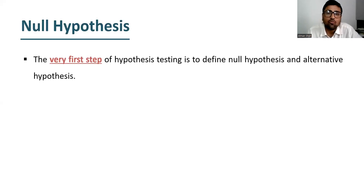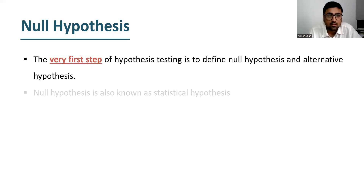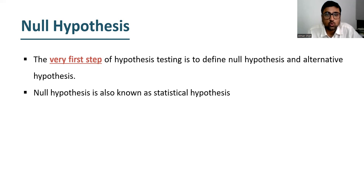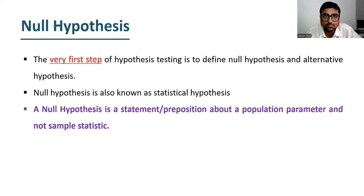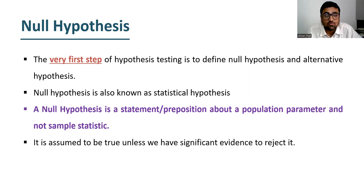The very first step of hypothesis testing is to define null and alternative hypothesis. The null hypothesis is also known as statistical hypothesis and it is denoted by H0 or Hn. A null hypothesis is a statement or proposition about a population parameter and not sample statistic. Please keep in mind that null hypothesis is always about population parameter. The null hypothesis is assumed to be true unless we have significant evidence to reject it.